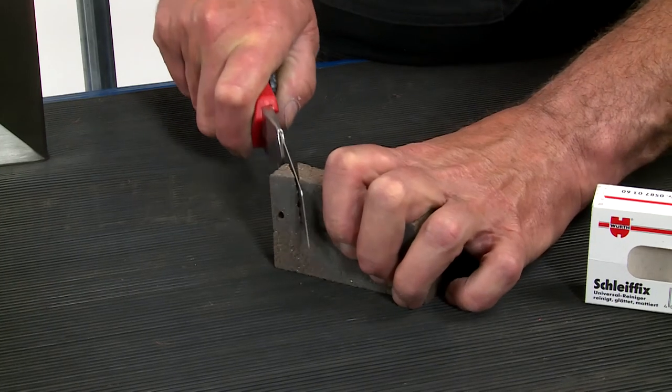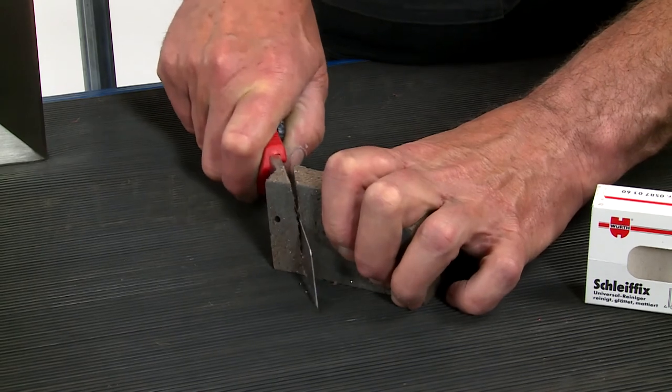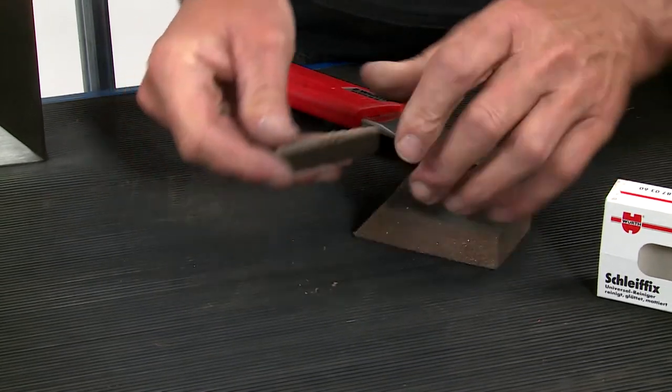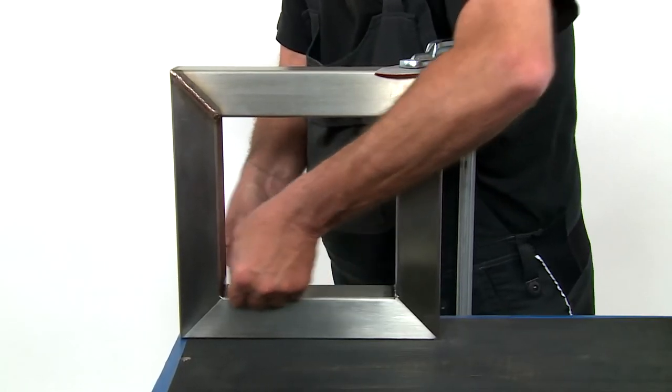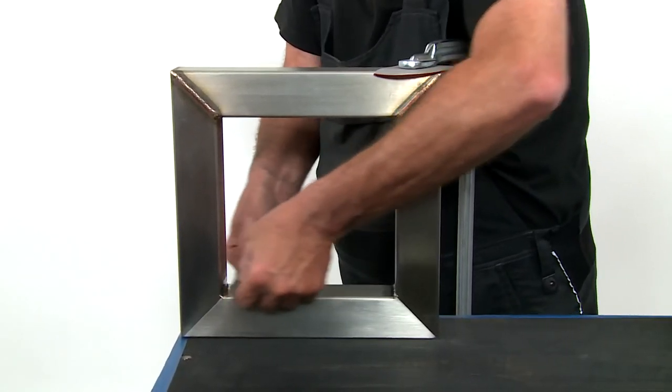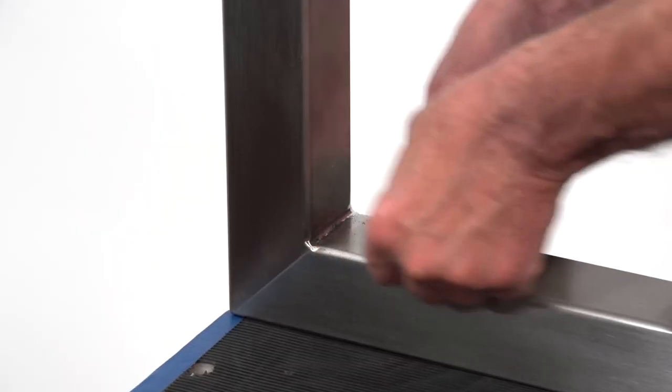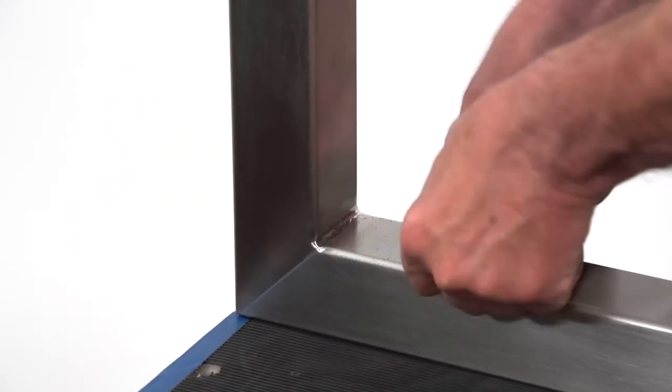Take the Schleyfix abrasive block to restore the finish. So that the fillet can be reached completely, the front end of the abrasive block is here also trimmed to an angle of 45 degrees. Using strong pressure, you can now restore the original finish.